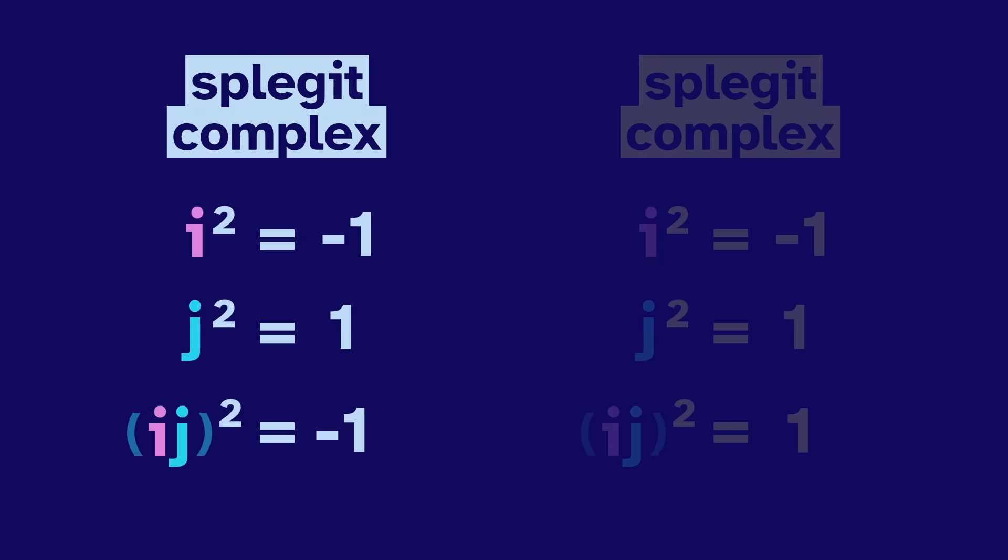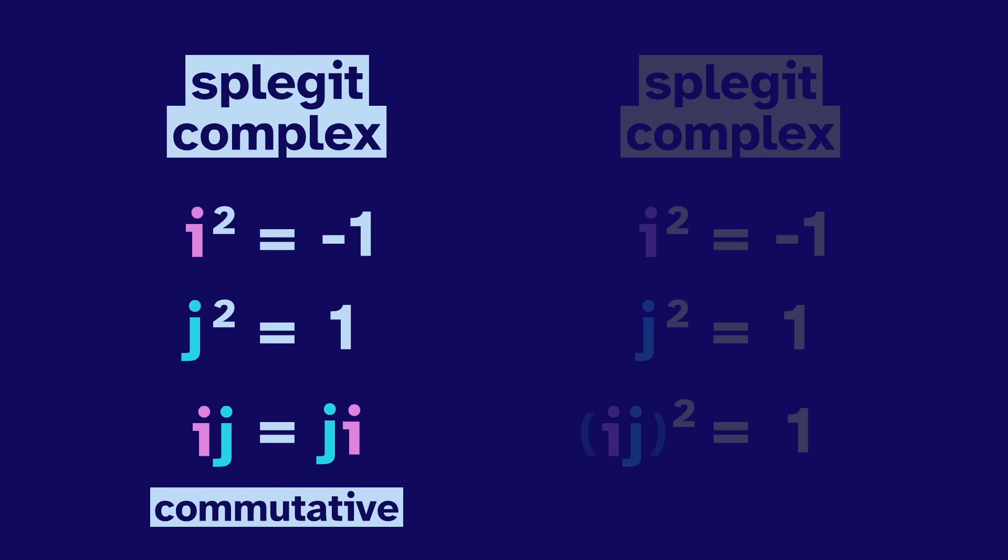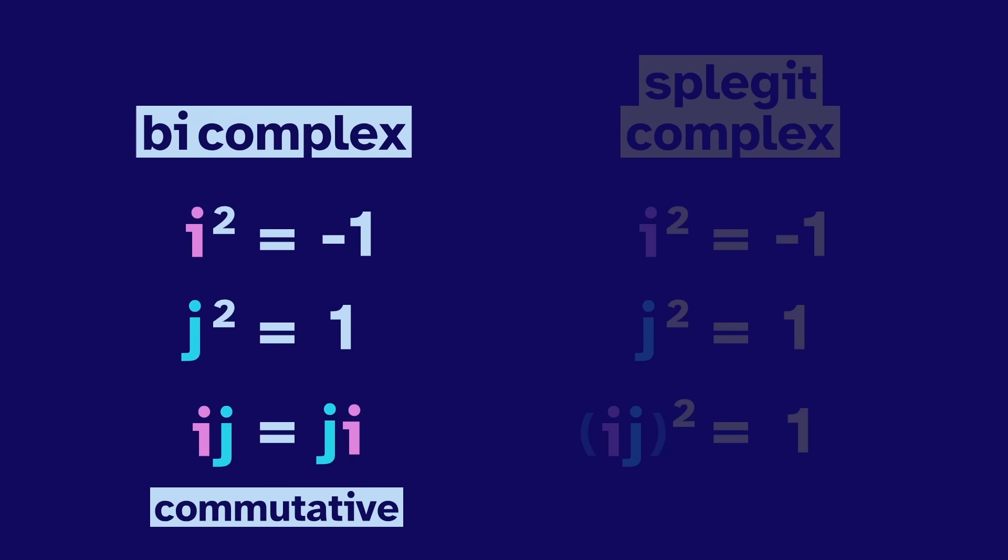In the negative one case, we do a little ouch, and find that i and j are commutative. These are called the bi-complex numbers.